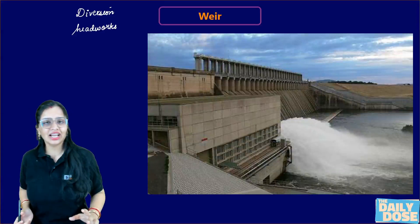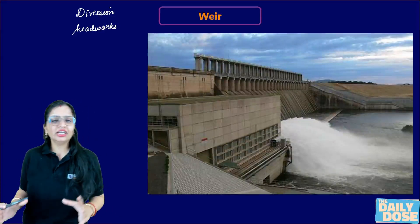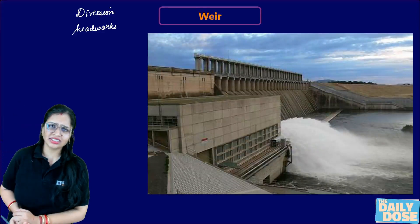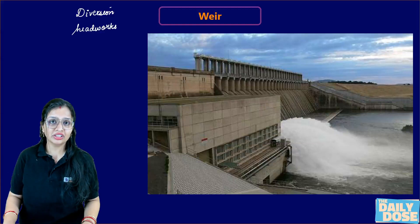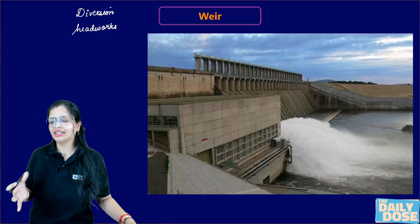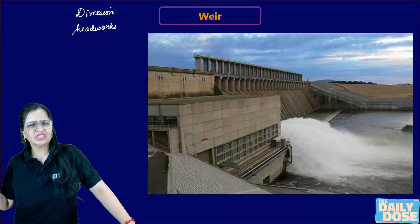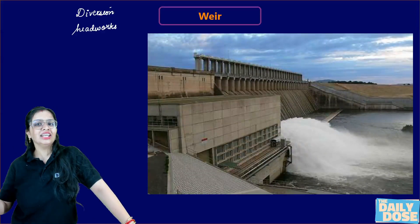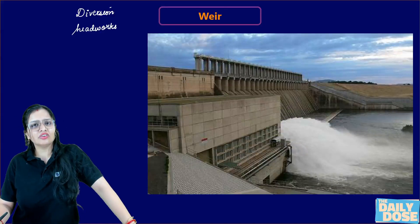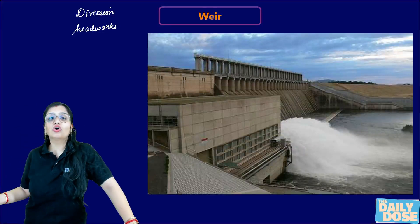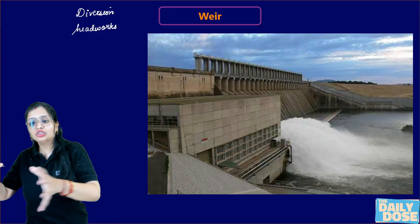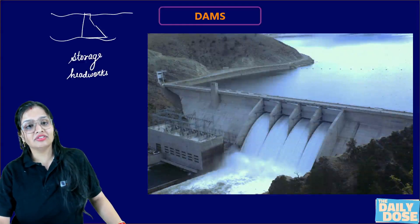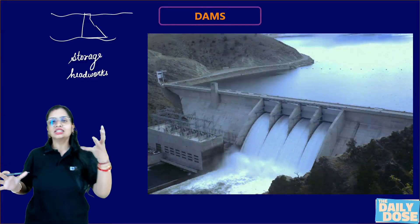This is actually an interview question. Generally, you construct diversion headworks in places where there is a sufficient amount of water in the river all throughout the year. There's nothing like a decrease in water level during summer season. When it is a perennial river, it's better to go for diversion headworks — you just divert the flow of water into the canal.